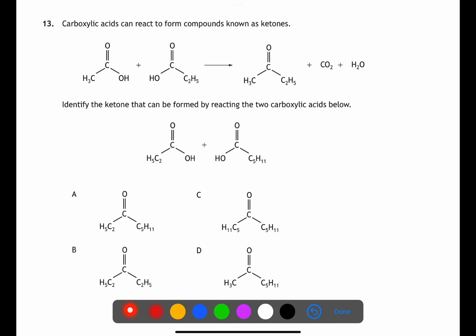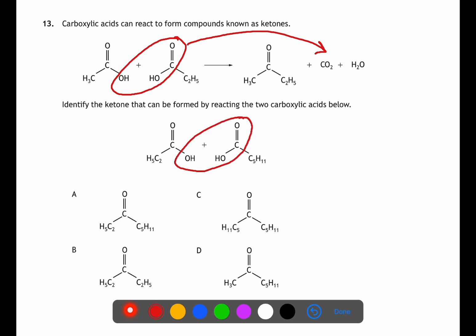For question thirteen, a problem-solving question, examine what is happening in the example reaction. The product contains CH₃ from the left-hand molecule and C₂H₅ from the right-hand molecule, both joined to a C=O. The OH groups from both molecules and one of the C=O groups have been removed, forming CO₂ and water. Apply the same removal to the given reactants and join the remaining parts — this means A is your answer.